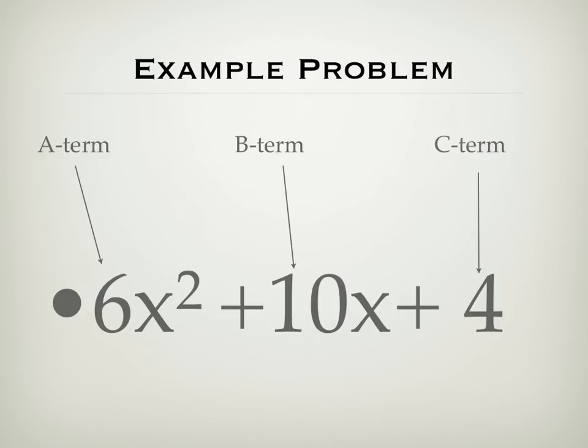Our a term is 6, our b term is 10, and our c term is 4. This is a non-monic quadratic because the a term is not 1. When the a term is not 1, it becomes a bit harder to solve this quadratic.